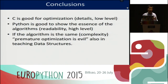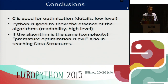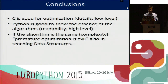Conclusions. There is a trade-off in choosing a language to teach. C is good for optimization — to see the details, the low level. But Python is also good to show the essence of the algorithms at a high level. If the algorithm is the same — the same number of steps, the same complexity — premature optimization is evil, also in teaching data structures. Thank you.